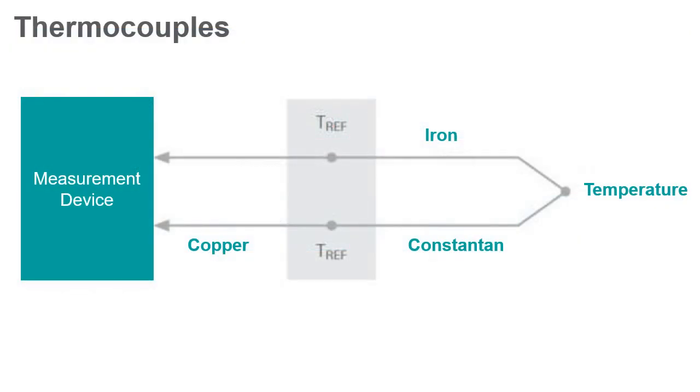Thermocouples operate under the principle known as the Seebeck effect. When two wires made of dissimilar metals are joined and heated at one end, a thermoelectric circuit is formed that causes a measurable voltage differential, known as the Seebeck voltage, at the cold end.